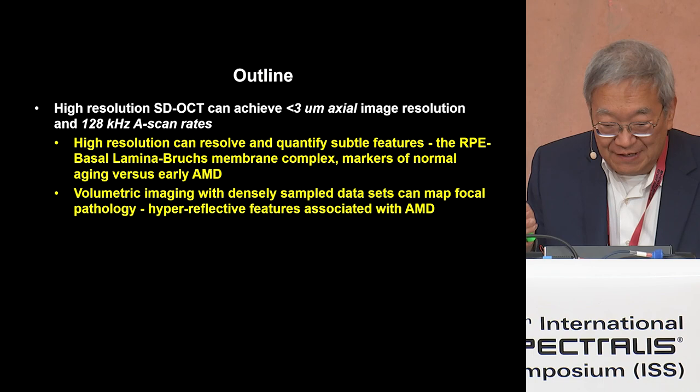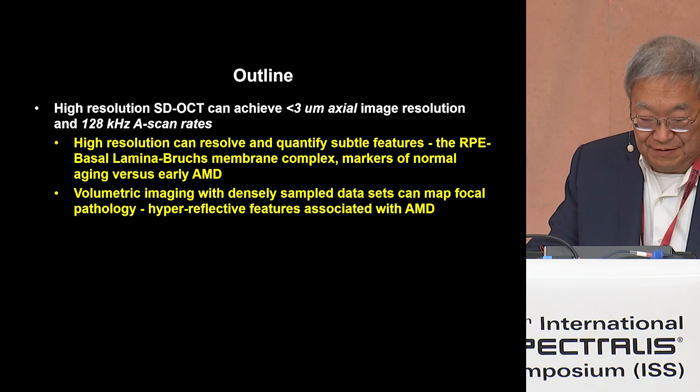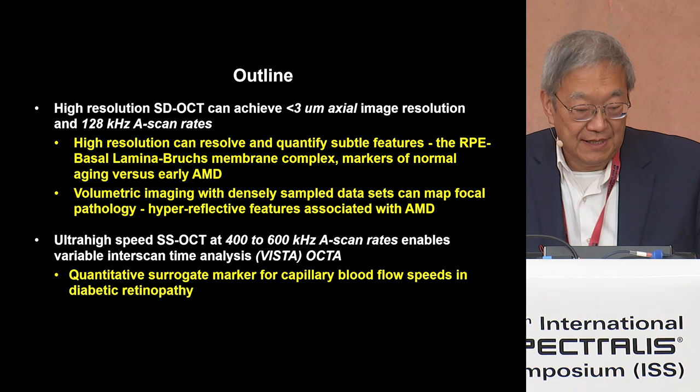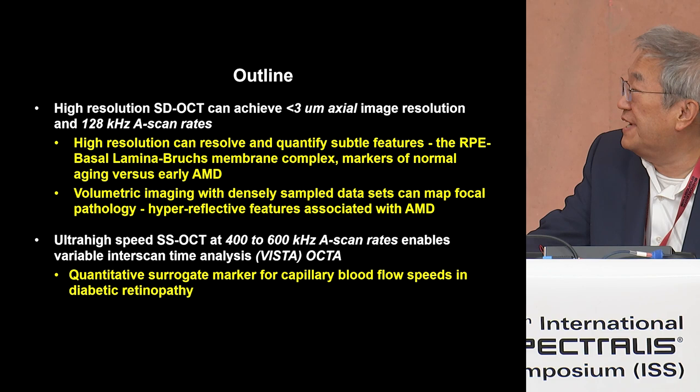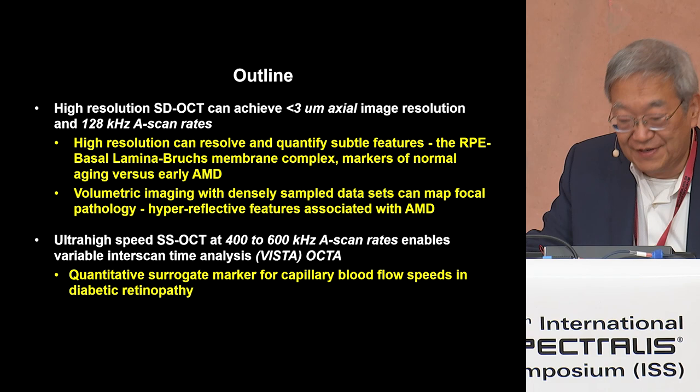This is the first part of the presentation on high-resolution OCT. The second part emphasizes ultra-high speed. In this case, we can image at 400 to 600 kilohertz axial scan rates, which are much faster than commercial systems. This is a prototype instrument, and with these types of speeds it's possible to do quantitative OCT angiography.